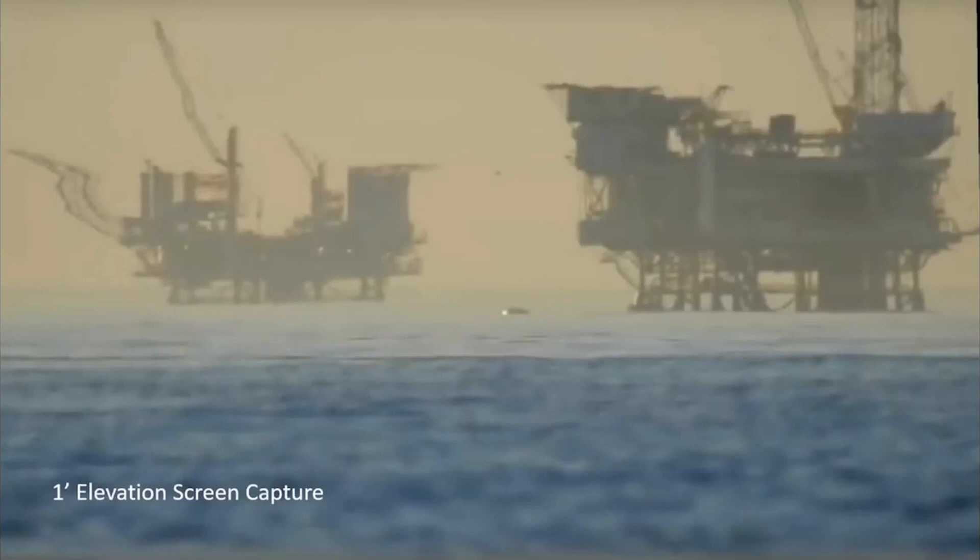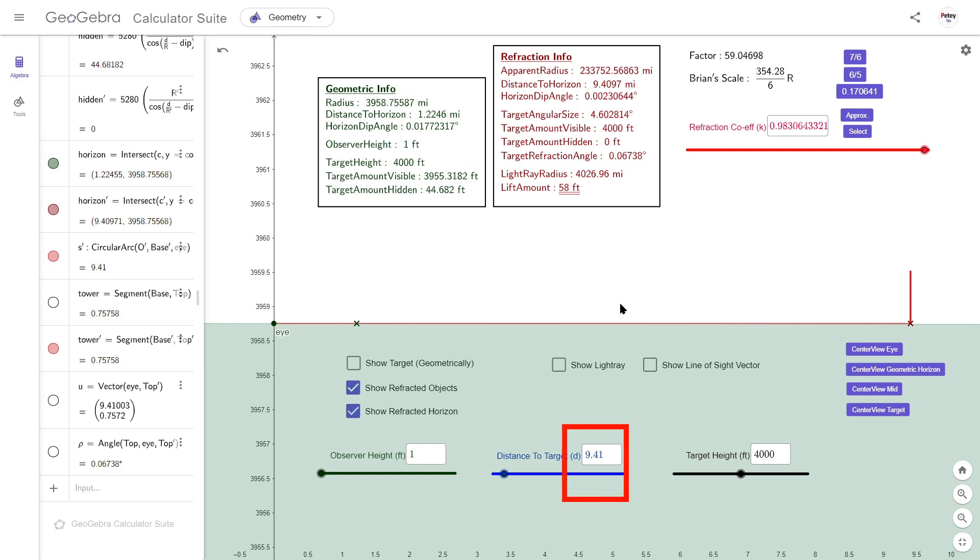Let me give you another example. The platform on the left is 9.41 miles away. And this image was captured from a 1 foot observer height. If we set the refraction factor so that the refracted horizon is the same distance away. Then we should be able to see every inch of the platform. No hidden amounts. And no bottom up obstruction. And this is what the geometry shows. Everything is visible. And there's nothing hidden.